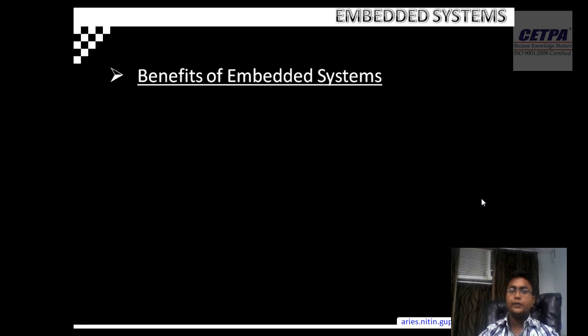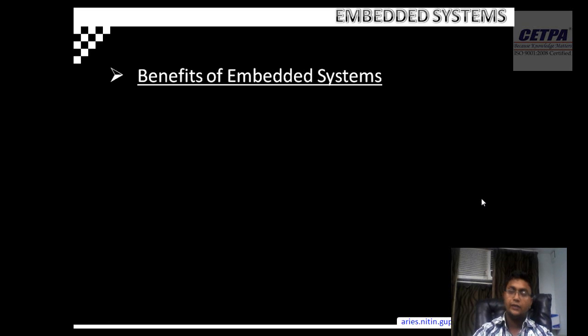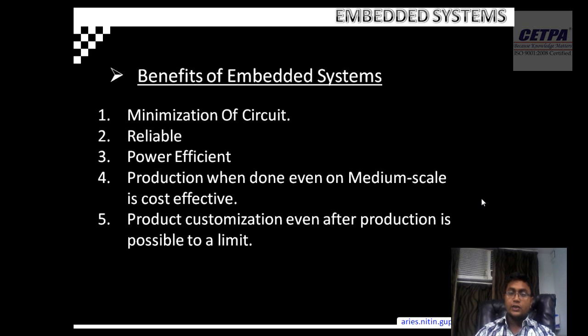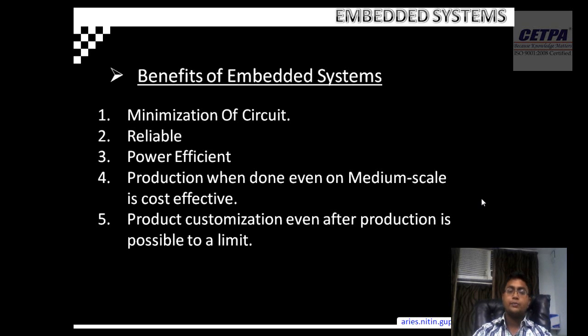If we see the benefits of the embedded system — earlier systems were heavy, bulky and not intelligent. Today's systems equipped with embedded technology are small circuits, much more reliable than older ones, and power-efficient — as you can see in the case of AC, washing machine, TV and a lot more. The production is cost-effective since once an embedded device is made, it is easy to reproduce. The main advantage is product customization, which can be achieved through reprogramming.